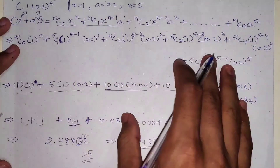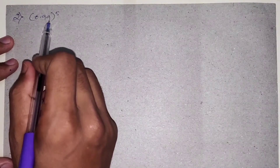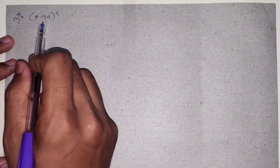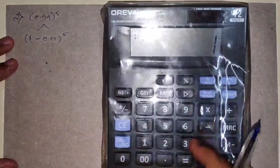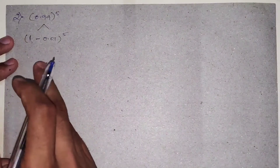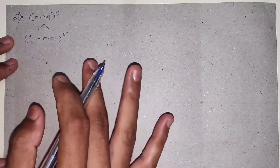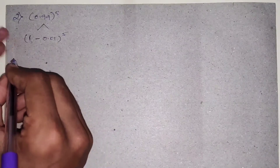Now for the next question with a minus sign. The question is: find the value of 0.99 to the power of 5. We split this as 1 minus 0.01 to the power of 5. So here we have a minus sign, and we use the same formula but with the minus version: the formula for (x minus a) to the power of n.